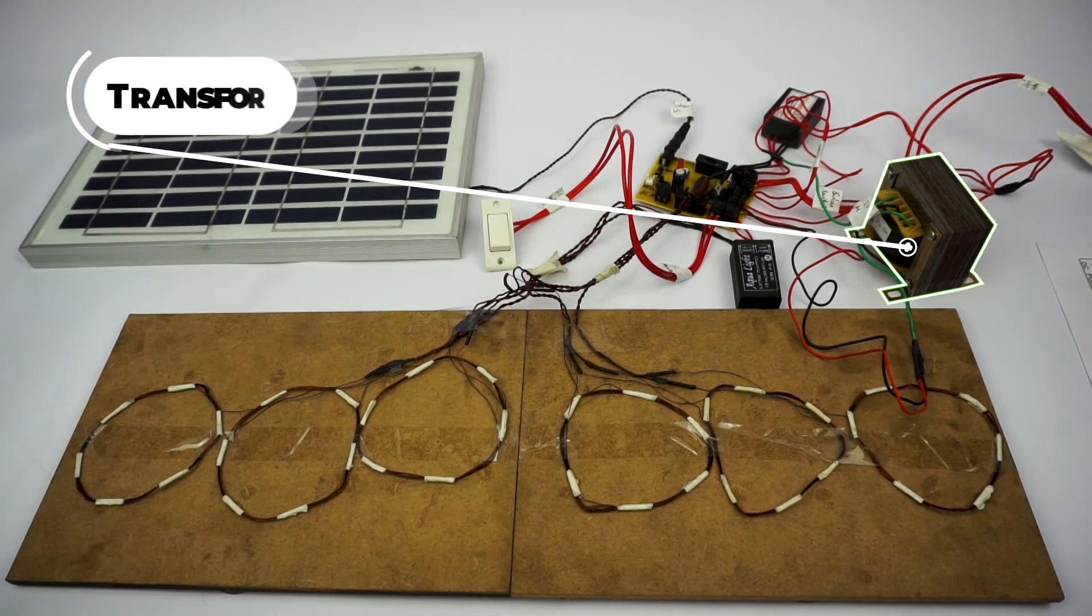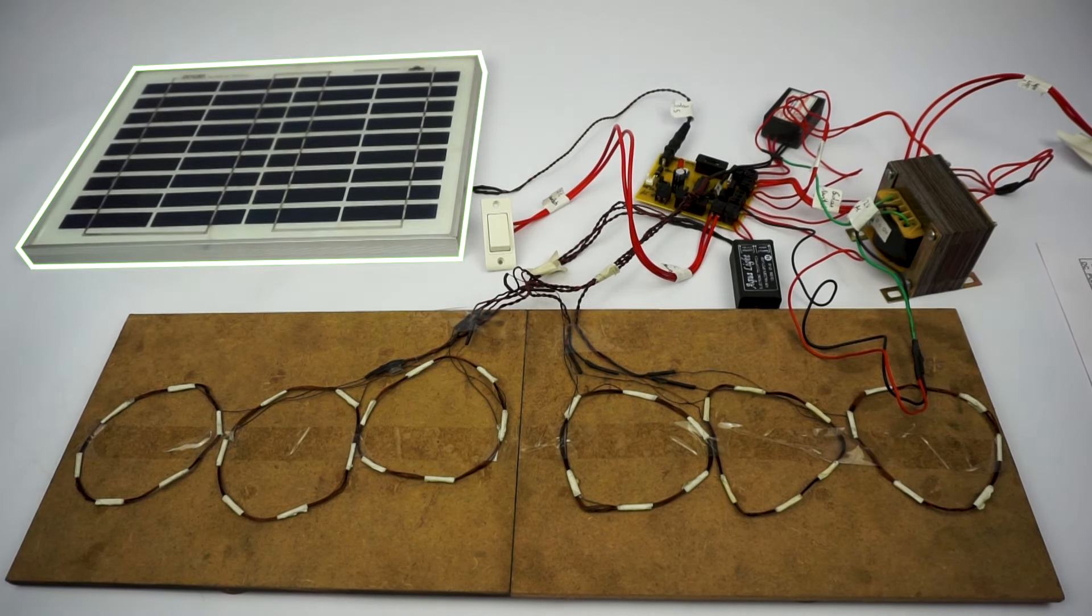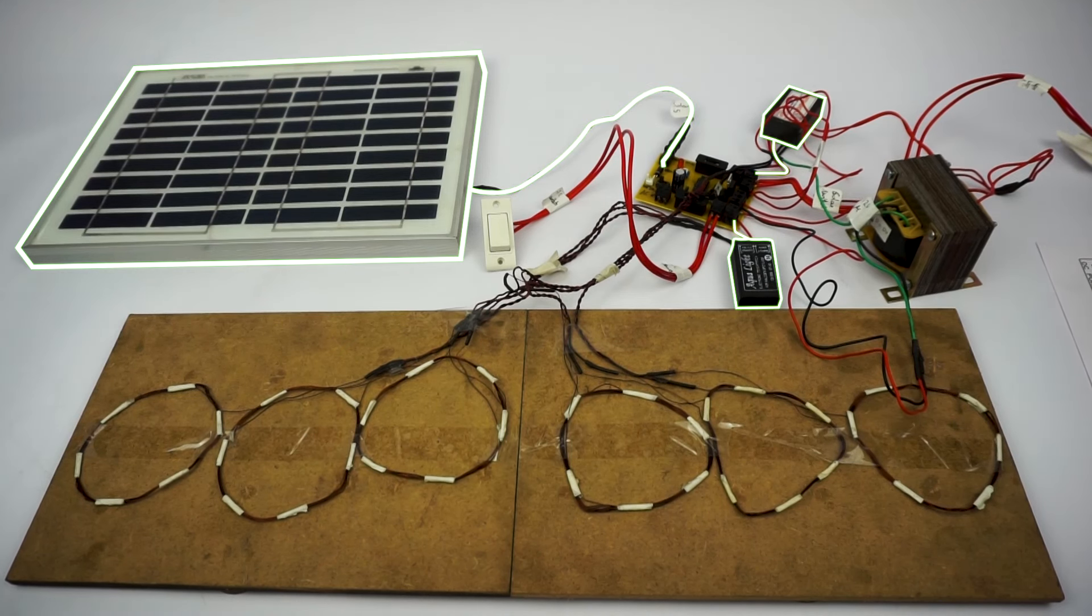These coils are connected to a transformer which is used to power them. How the system works is the solar panel, as you can see here, is used to charge the battery using charge controllers.